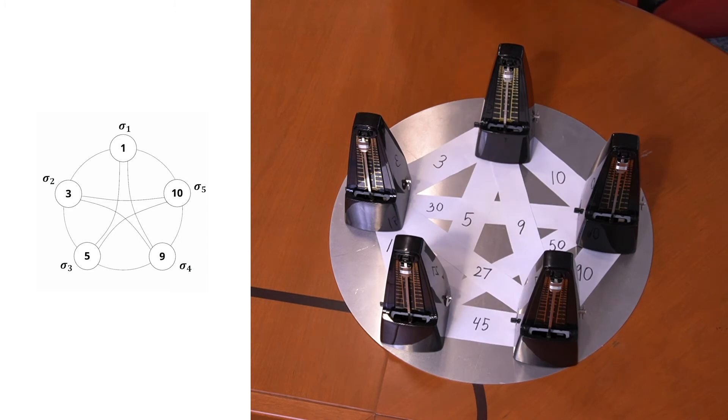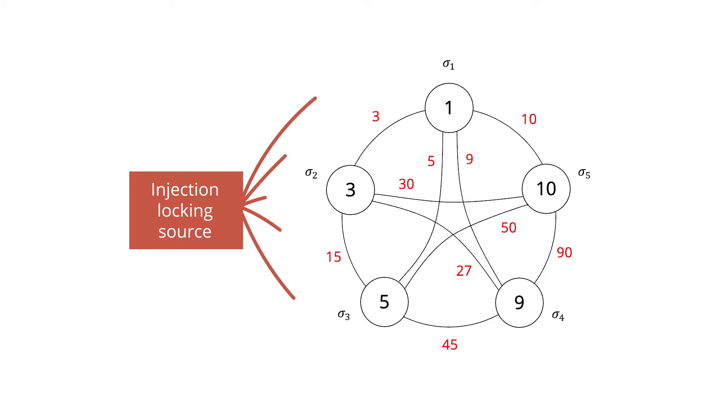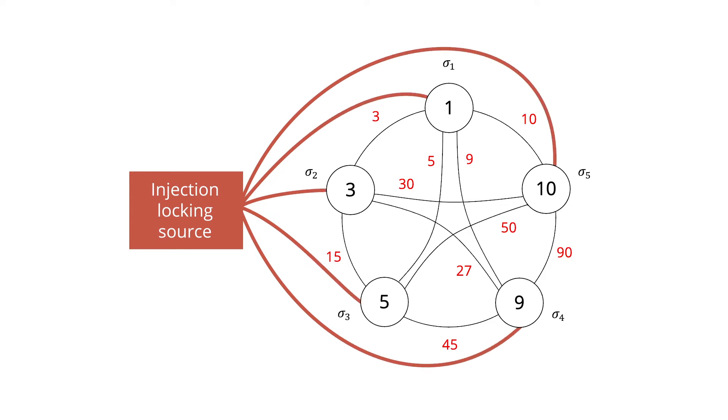If we actually had an Ising computer, it would naturally try to minimize the Hamiltonian, and we would be able to tell which cell was in which partition. I have an Ising computer in the form of five metronomes. In our first Ising video, the coupling strengths were all the same, but now we've programmed the coupling strengths to match this particular problem. All metronomes are set to Lento — 48 beats per minute — with random initial positions. There is also a metronome on another platform providing the sub-harmonic injection-locking signal at 96 beats per minute. The strength of this injection-locking signal is critical: too strong and the system won't evolve to the correct solution; too weak and the metronomes won't phase lock.